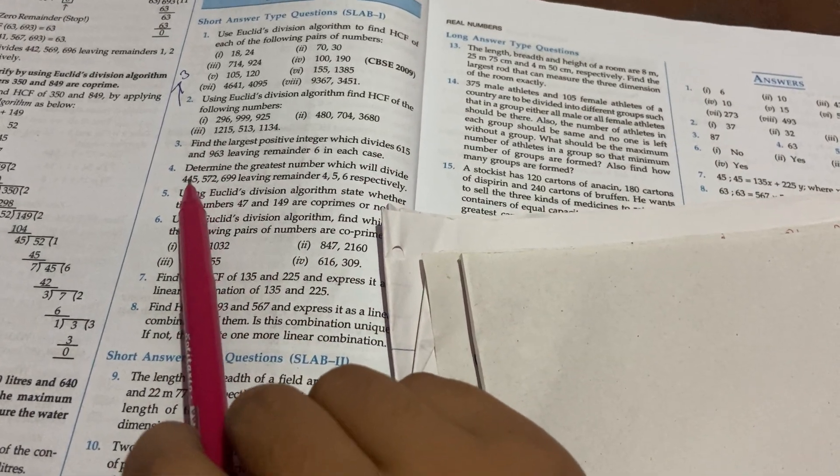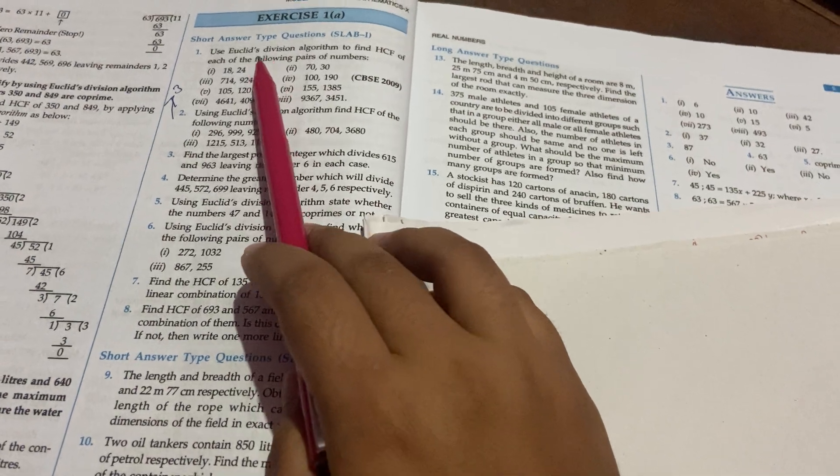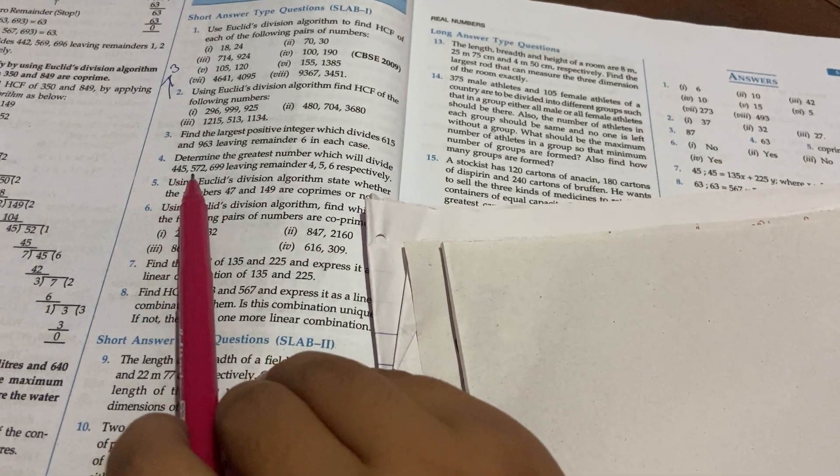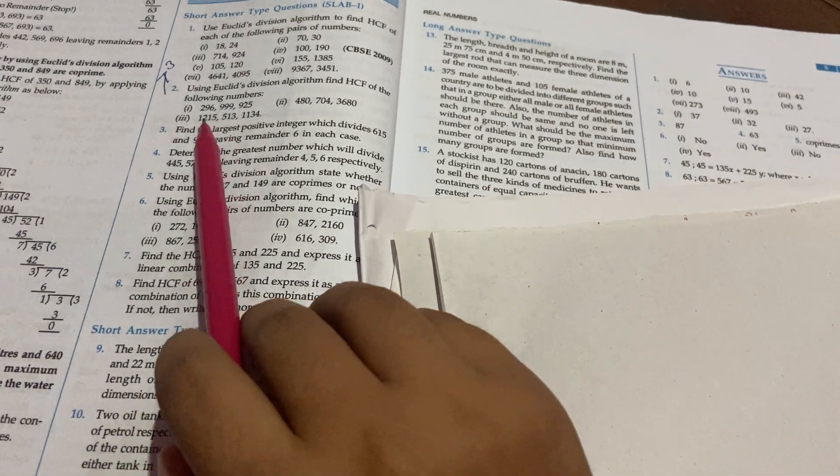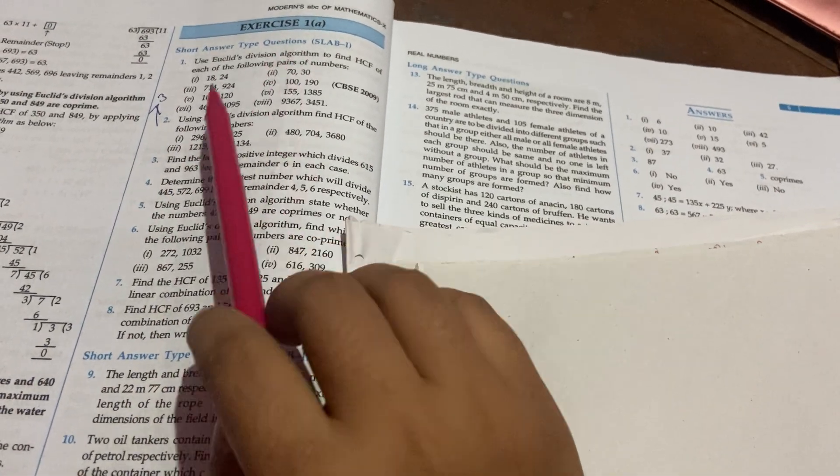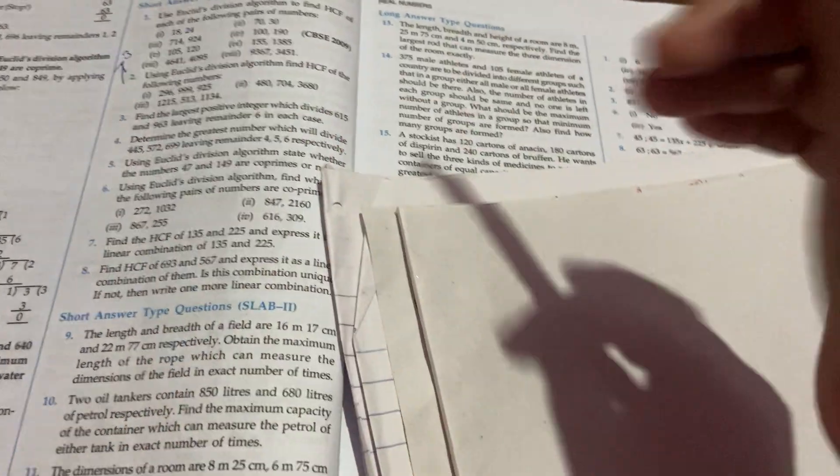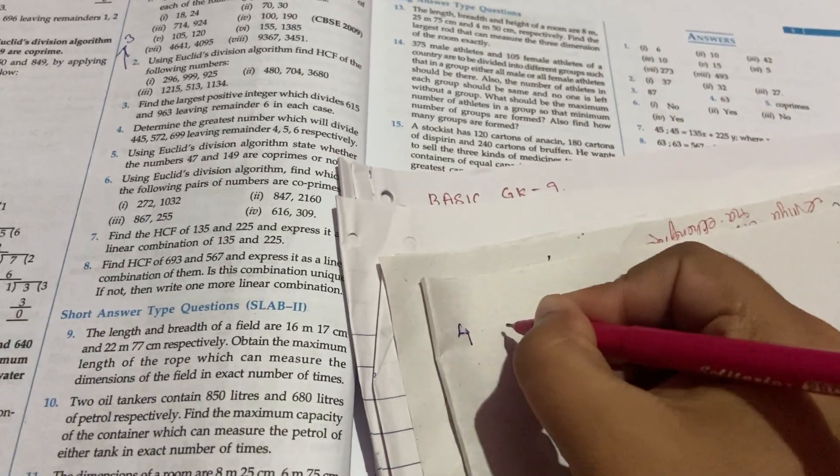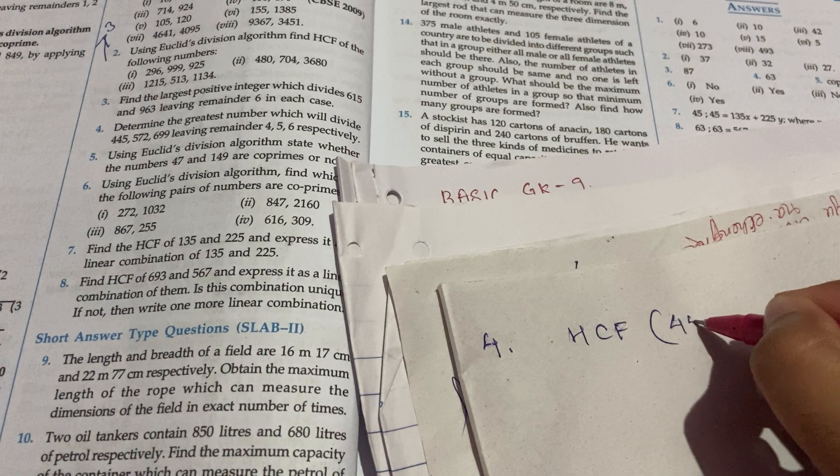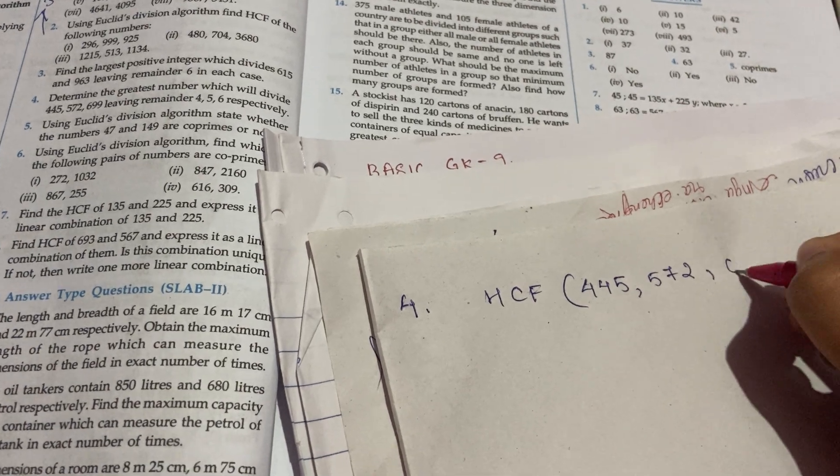Question number 3 is to determine the greatest number. The numbers are 445, 572, and 699.